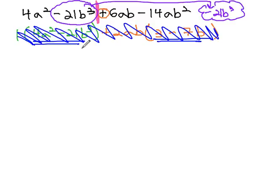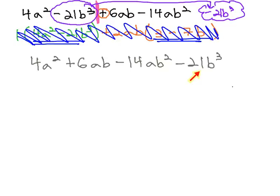When we do, the expression will now read 4a squared plus 6ab, minus 14ab squared, minus 21b cubed. You'll notice the 21 is now in the second group, and we've moved the 6ab forward to the first group. Maybe this grouping will work better for us. Let's give it a try.